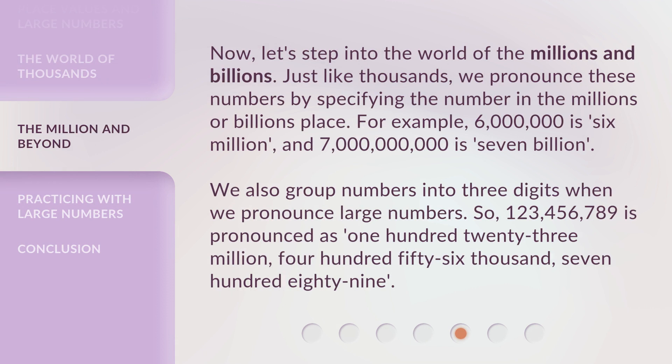Now let's step into the world of millions and billions. Just like thousands, we pronounce these numbers by specifying the number in the millions or billions place. For example, 6,000,000 is 'six million,' and 7,000,000,000 is 'seven billion.' We also group numbers into three digits when we pronounce large numbers. So, 123,456,789 is pronounced as 'one hundred twenty-three million, four hundred fifty-six thousand, seven hundred eighty-nine.'